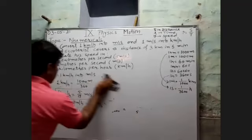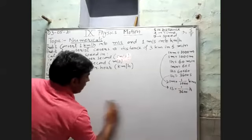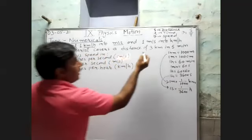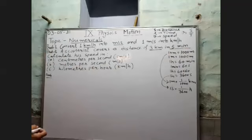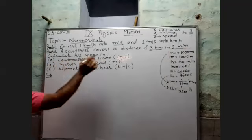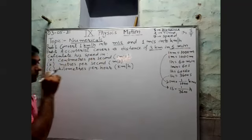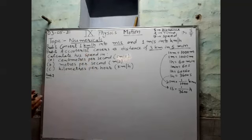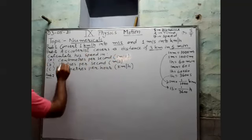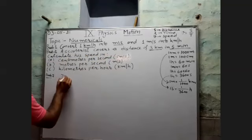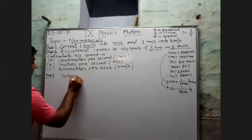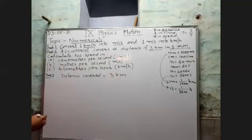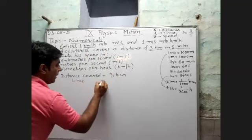The second problem: a scooter covers a distance of three kilometers in five minutes. Calculate the speed in centimeter per second. Write the given quantities: distance covered by scooter is three kilometers and the time taken is five minutes.